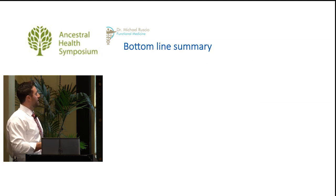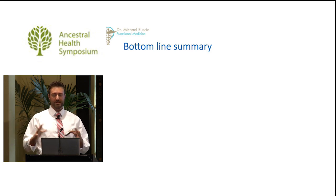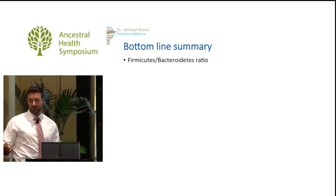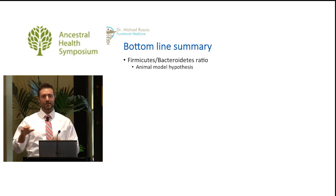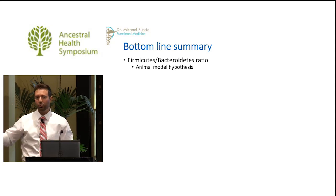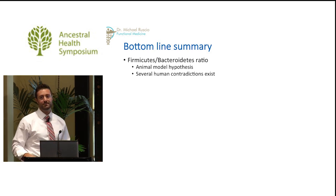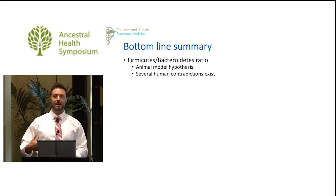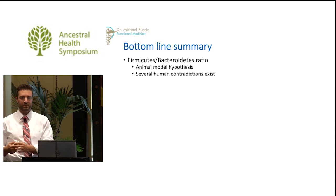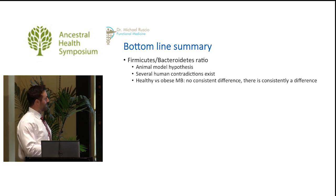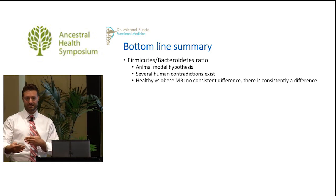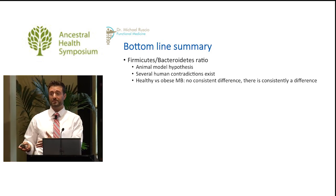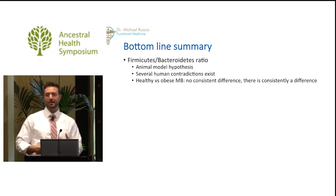Now the microbiota and obesity. The Firmicutes-to-Bacteroidetes ratio is something you'll hear a lot about. The animal model hypothesis definitely supports an alteration—a high Firmicutes to Bacteroidetes ratio correlated with obesity. However, when you go into human-level studies, there are several contradictions, so that hypothesis does not hold its weight in human studies. In healthy versus obese microbiota, there's no consistent specific difference, but there is consistently a difference. Consistently, the obese microbiota is different from healthy—it's just that the specific difference is not consistent—except perhaps the one exception of decreased diversity, which seems to be the recurring theme: decreased diversity is kind of the kiss of death for your microbiota.